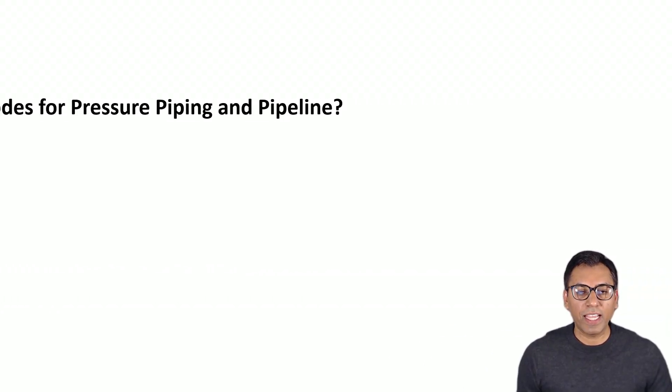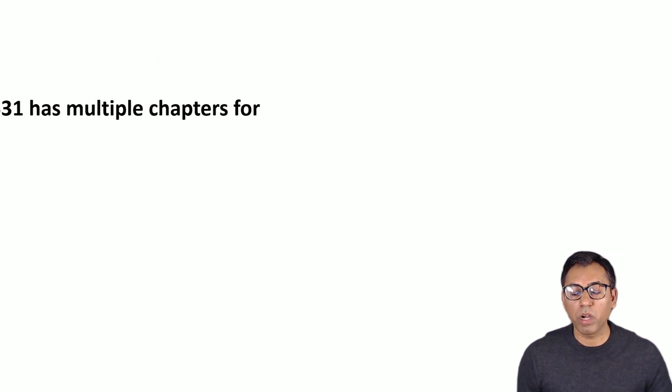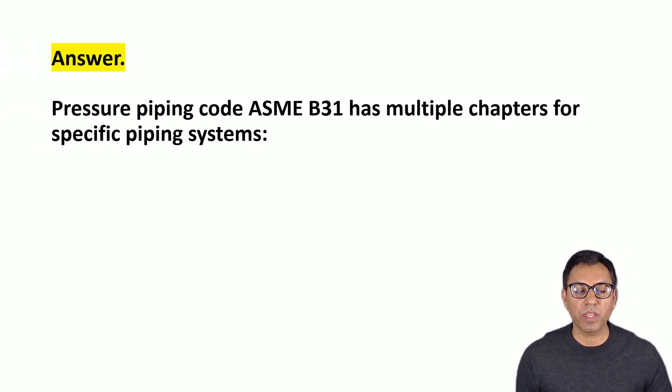Hi everyone. In this video I will talk about ASME B31, its chapters and their brief introduction. The question is: what are ASME B31 codes for pressure piping and pipelines? Let's talk about the answer in the next slides. ASME pressure piping code B31 has multiple chapters for specific piping systems.